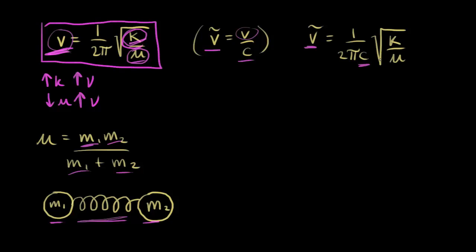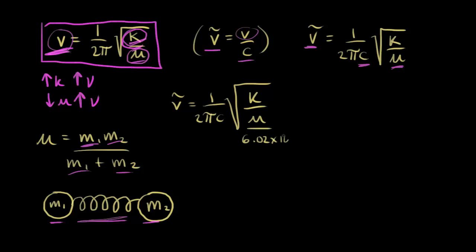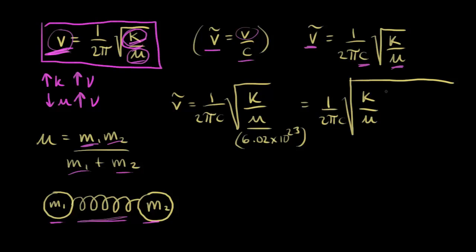There's one more thing we have to do to get the proper units for wave number, because here the reduced mass is in grams and we need to make that atomic mass units (AMU). We can divide by Avogadro's number to get that. So wave number is equal to one over two pi c, times the square root of k over the reduced mass, and to get proper units we divide by Avogadro's number, which is 6.02 times 10 to the 23rd. We can move Avogadro's number up to the numerator.